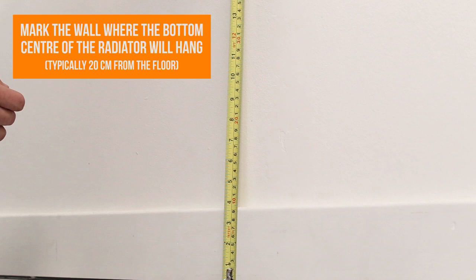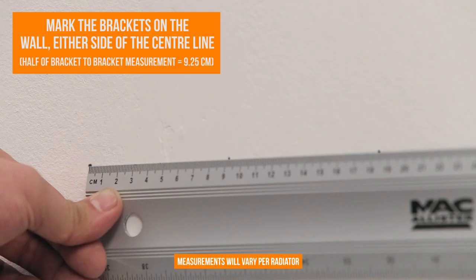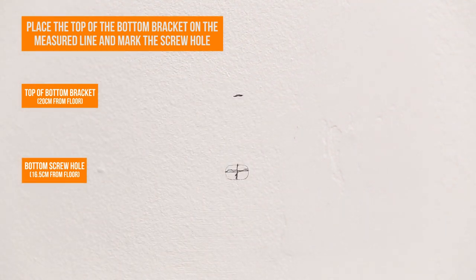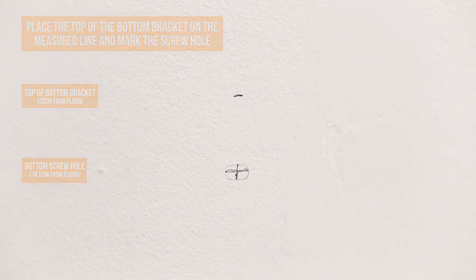Mark the wall and then mark either side where the top of the bottom brackets will be. Place the top of the bottom bracket on the measured line and mark the screw hole. Do this for both sides.